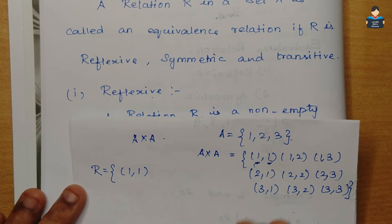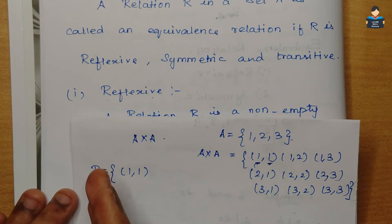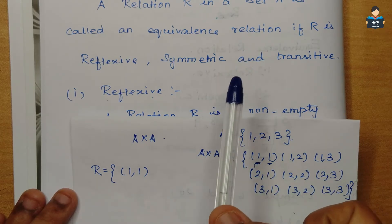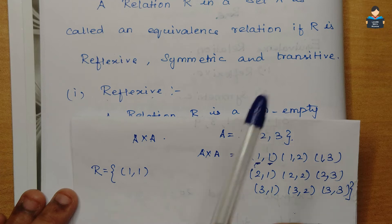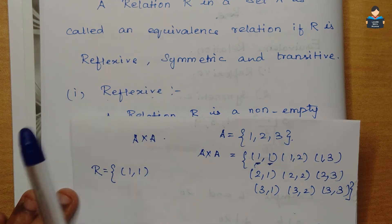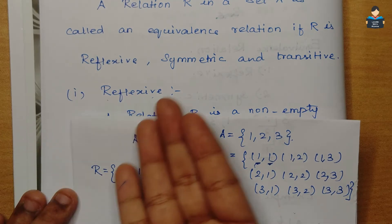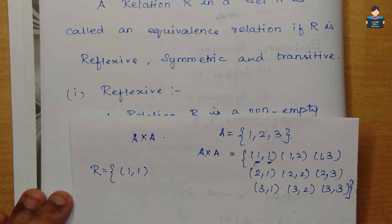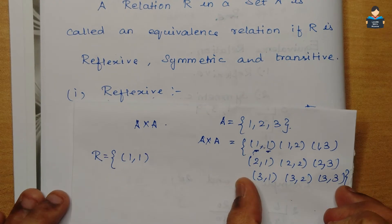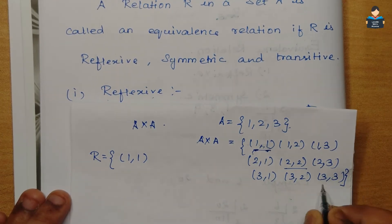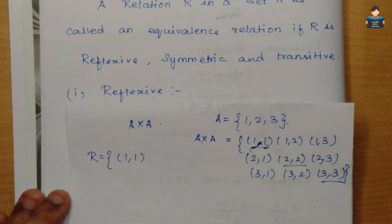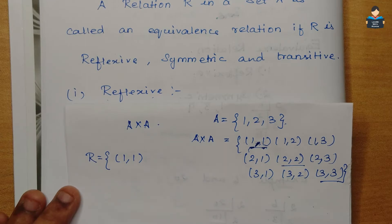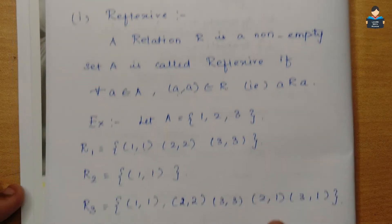Reflexive means like a mirror image or reflection — the first and second element in the ordered pair are the same, like (a,a). So pairs like (1,1), (2,2), (3,3) make a relation reflexive. If all such pairs are present in the Cartesian product, we can say the relation is reflexive.